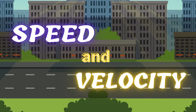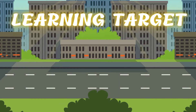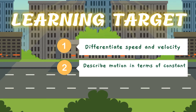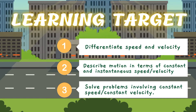But before we go further, allow me to share with you our learning targets. First, we're going to differentiate speed and velocity. Then, we're going to describe motion in terms of constant and instantaneous speed or velocity. Third, we're going to solve problems involving constant speed and constant velocity.